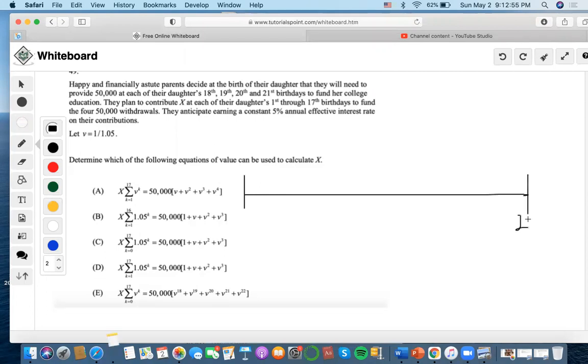So we know that at birthdays 21, 20, 19, and 18, they want to give out $50,000 to fund their education. So $50,000 at each. And then they also plan to contribute X throughout from the first birthday to the 17th birthday to fund those withdrawals. Correct?